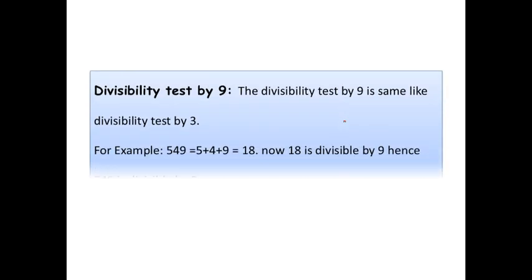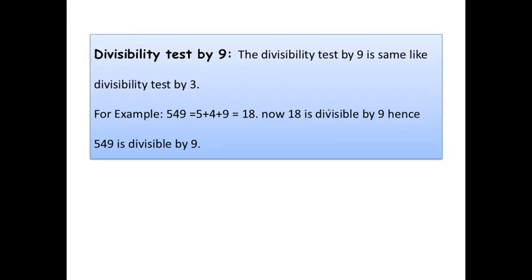Now, let us see the divisible test by 9. The divisible test by 9 is same like divisible test by 3. For example, 549 is equals to 5 plus 4 plus 9 is equals to 18. Now, 18 is divisible by 9. Hence, 544 is also divisible by 9.